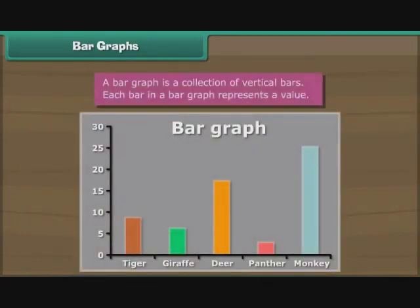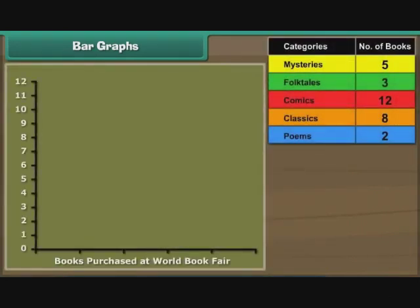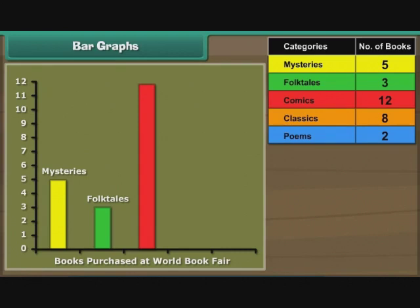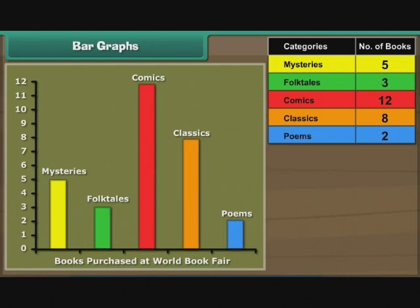A bar graph is a collection of vertical bars. Each bar in a bar graph represents a value. Let us now organize Ravi's data in the form of a bar graph. We first draw a bar 5 cm tall to represent mysteries. Then we draw a bar 3 cm tall to represent folktales. Next, we draw a bar 12 cm tall to represent comics. We now draw a bar 8 cm tall for classics. Last, we draw a bar 2 cm tall for poems. The bar graph is ready.